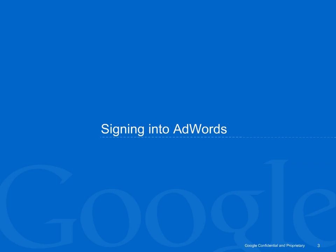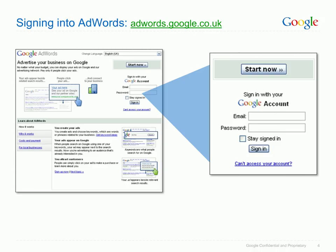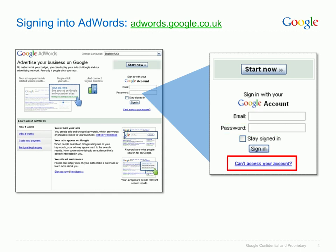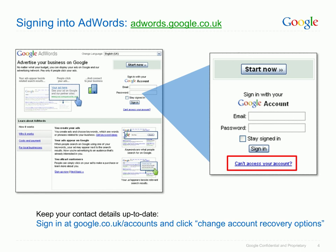Let's have a look at how you sign in to AdWords and what you can do if you forget your sign-in details. To sign in to your AdWords account, visit the AdWords sign-in page at adwords.google.co.uk. If you know your Google account details, you can enter your email address and password to sign in. If you're having trouble accessing your account, you can click the provided help link. We all forget our passwords at some point. Make sure that you keep your contact details up to date in your Google account. To view or update your contact details, go to google.co.uk/accounts and click change account recovery options.